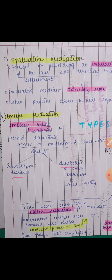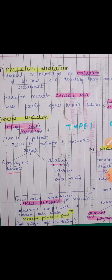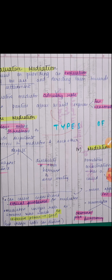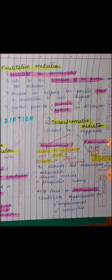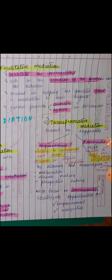Types of mediation: First, evaluative mediation — focused on providing an evaluation of the case and directing parties towards settlement. The evaluative mediator has an advisory role and will express what is fair and reasonable. Second, facilitative mediation — the mediator simply facilitates the conversation; focused on helping parties find a resolution, providing structure and agenda for discussions.